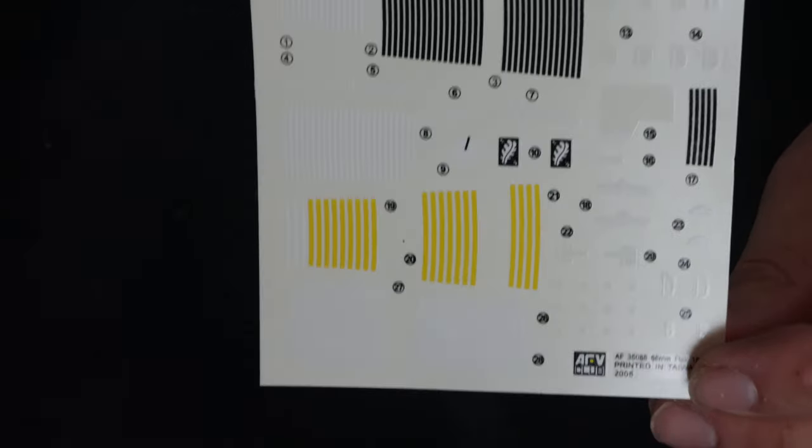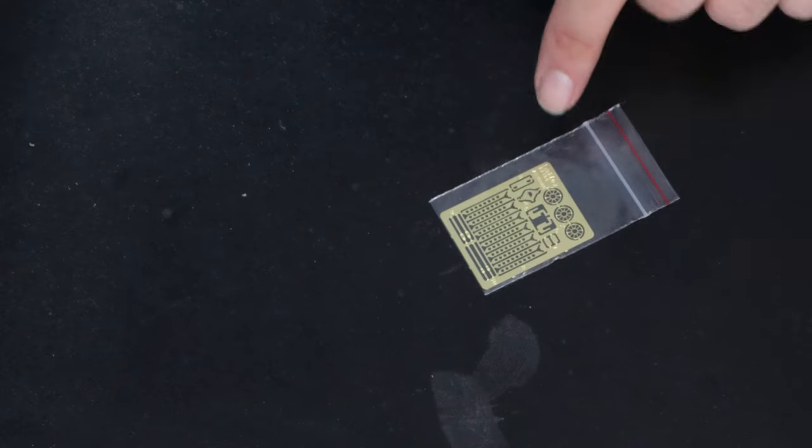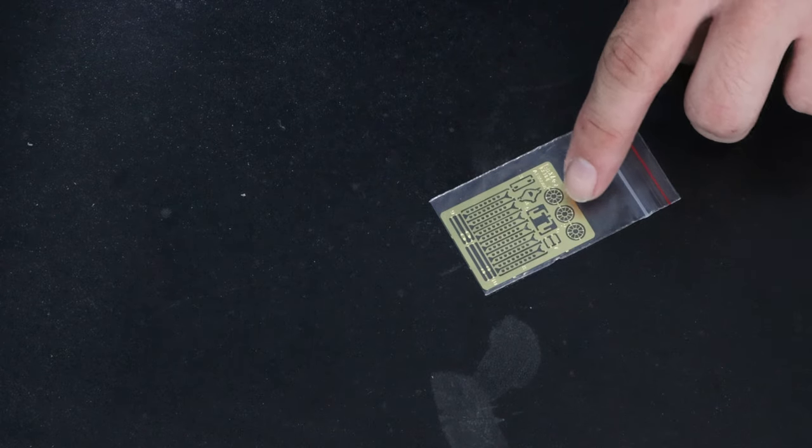And then the last thing in the box: the decals. So there are numerous markings to go on, and I'm not sure where anything goes, but there's white, yellow, and black markings for a lot of the stuff on there. They look very nicely crisp. I mean, they're just lines more or less. And then a small fret of photo-etch that includes things like the stakes that would go into the ground to hold it into place, and I think hand wheels or something like that. So that's everything that's in the box.